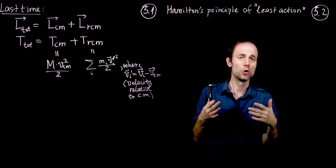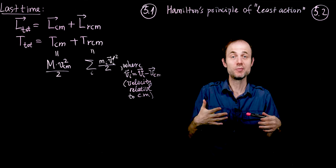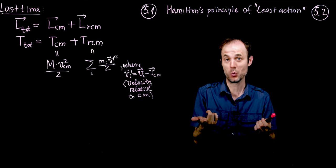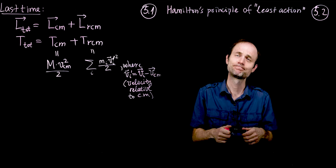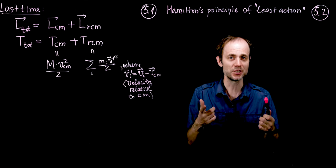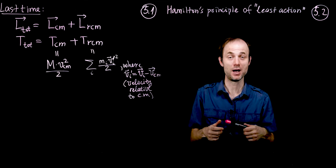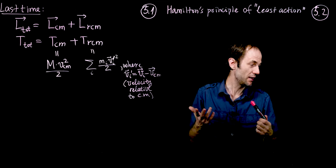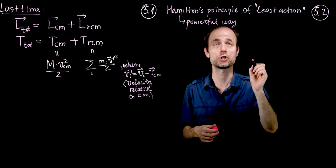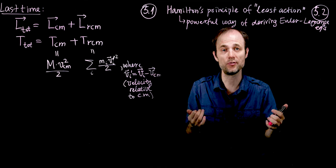This is a principle that is not totally foreign to us. When there is a task at hand that we'd like to complete, we try to minimize the amount of work we need to do to get there. Sometimes this principle can actually be called the principle of most action — I'm not joking. So what is this principle? It is a very powerful way of deriving Euler-Lagrange equations in a general way where it's not tied to a particular set of laws of physics.